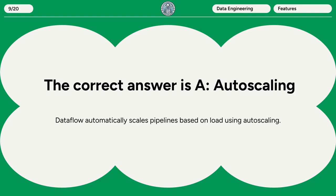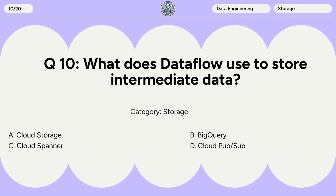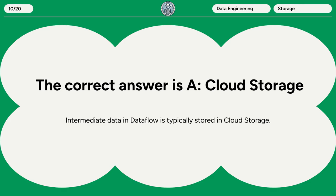Question 10: What does Dataflow use to store intermediate data? A. Cloud Storage. B. BigQuery. C. Cloud Spanner. D. Cloud Pub/Sub. The correct answer is A. Cloud Storage. Intermediate data in Dataflow is typically stored in Cloud Storage.